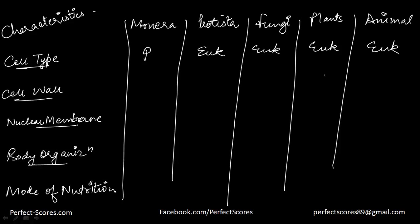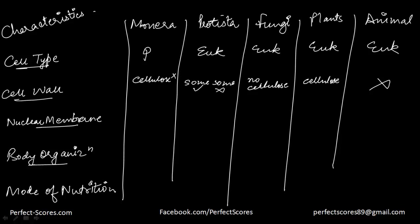What about the cell wall? In animals, cell wall is completely absent. In the plant kingdom, cell wall is present and it's made up of cellulose. In fungi, it is present but there is no cellulose in the cell walls. In Protista, the cell wall is only present in some — we will go into that when we do the details on kingdom Protista. In kingdom Monera, it is there but does not have any cellulose; instead it has polysaccharides and amino acids — that is the composition of the cell wall in Monera.